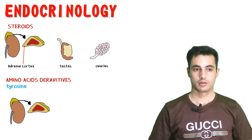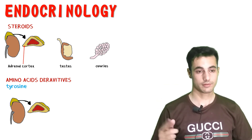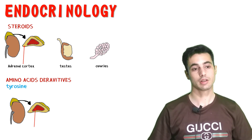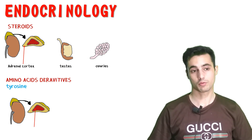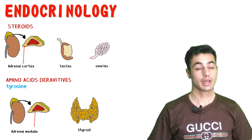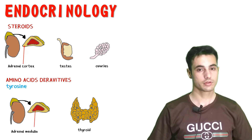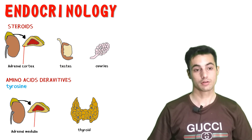The amino acid derivative tyrosine is the basis for two important groups. The adrenal medulla secretes epinephrine and norepinephrine, which are amino acid derivatives of tyrosine. The thyroid gland secretes thyroxine (T4) and triiodothyronine (T3), which are also amino acid derivatives.